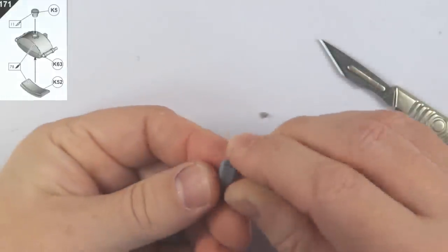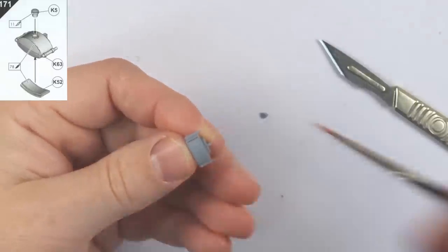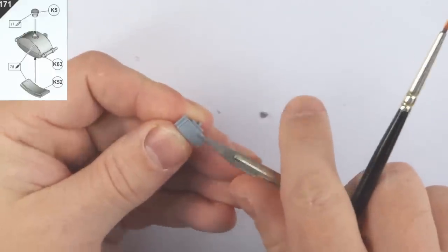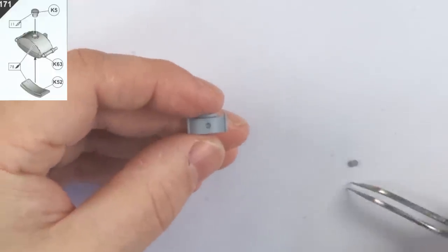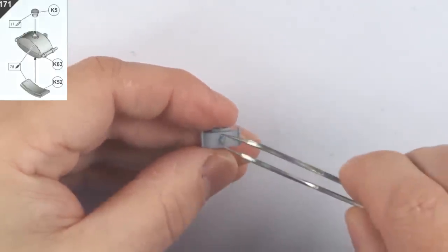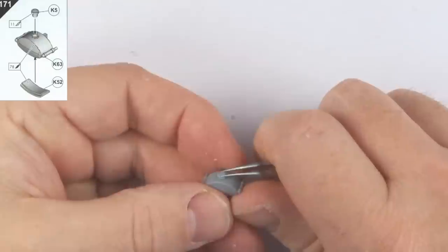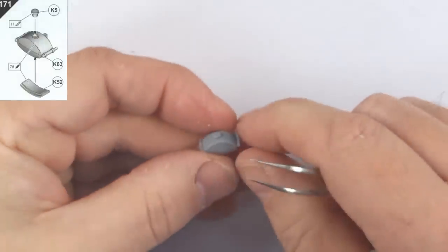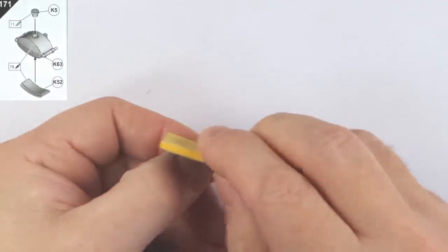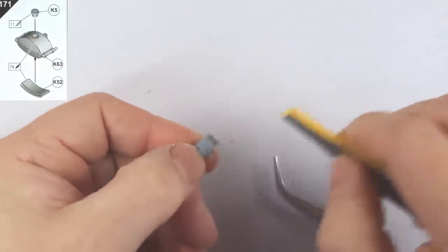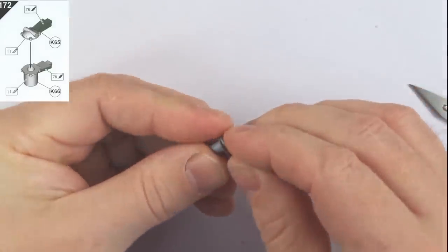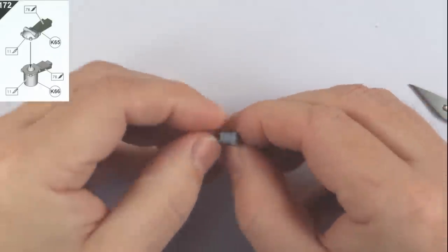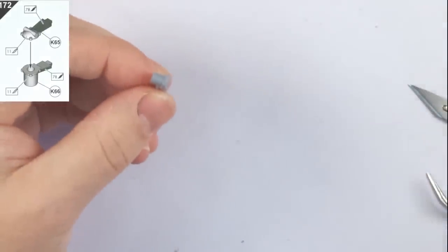I'm going to jump ahead now to 171 to create the Hydraulic Reservoir Tank. Simple, but be careful of the tiny filler cap which is a prime candidate for the carpet monster. I actually attached mine and then cleaned it up in situ to minimize handling and potential loss. 172 is another simple two part assembly for the engine firewall that we're making and setting aside until after it's painted.